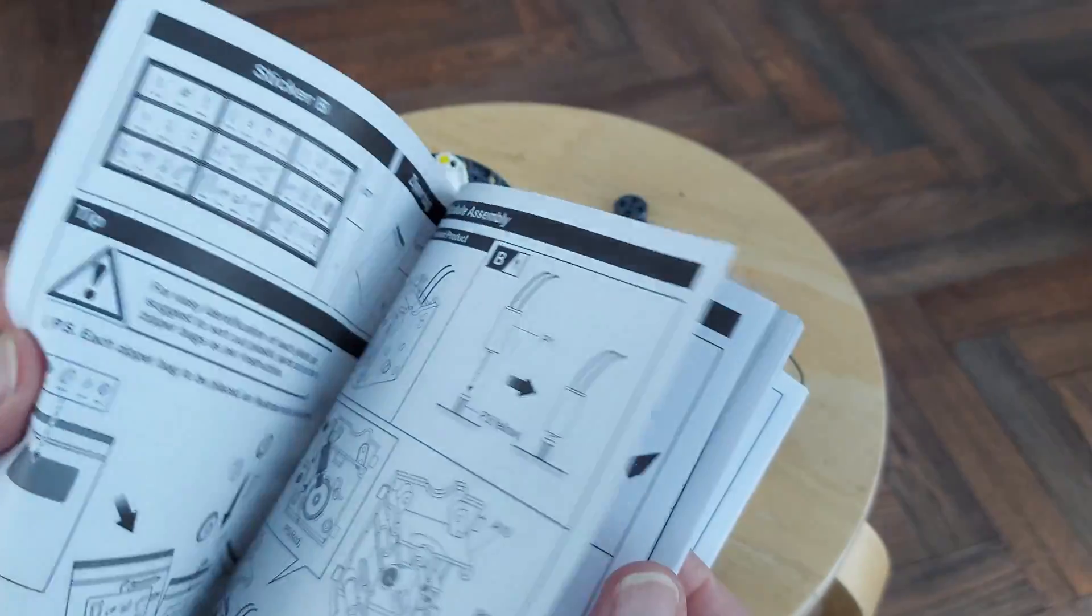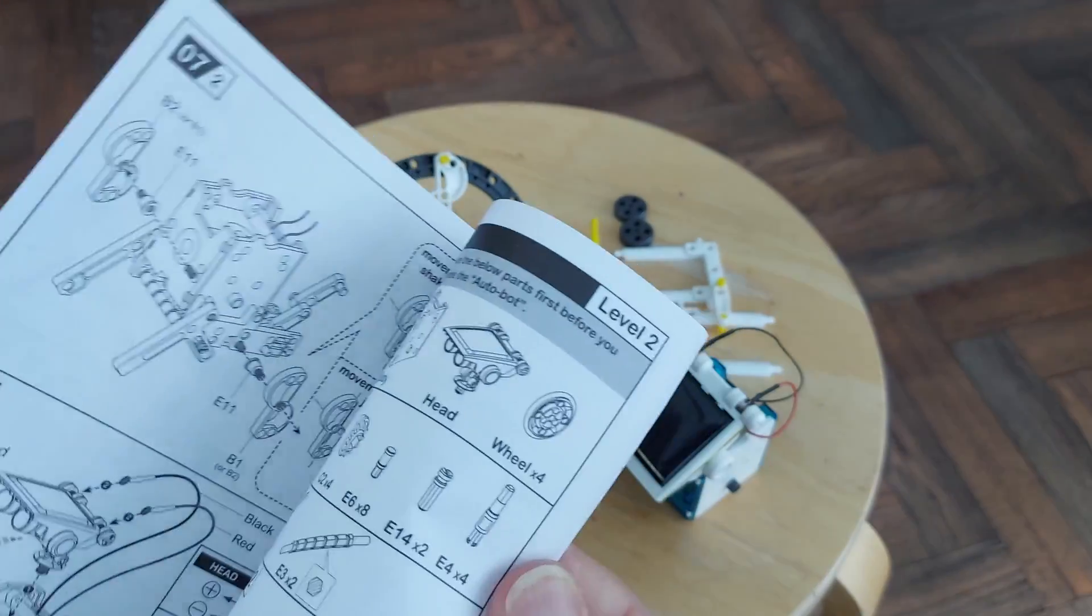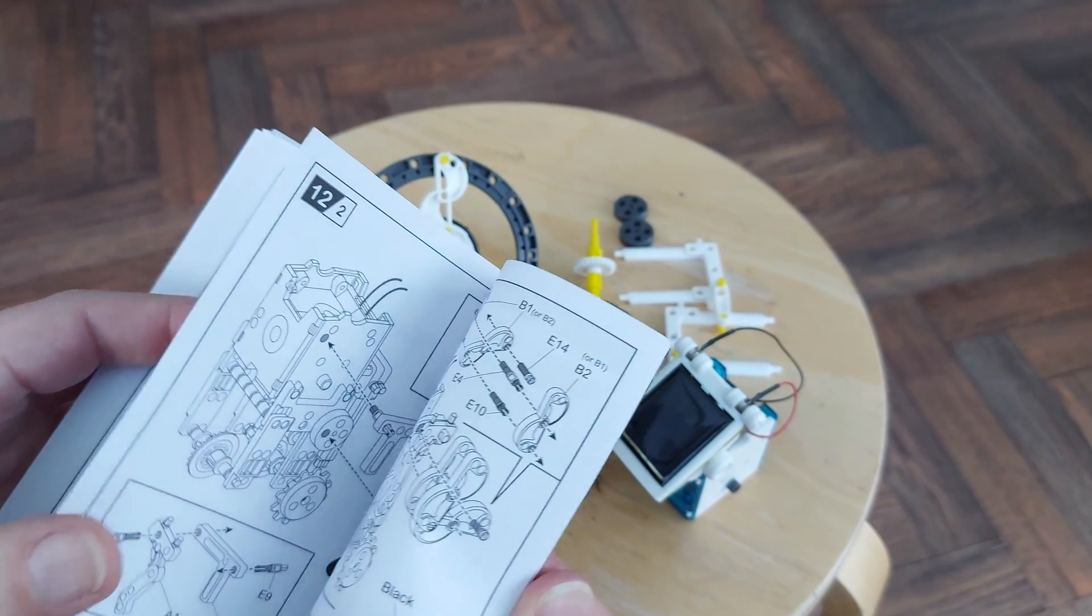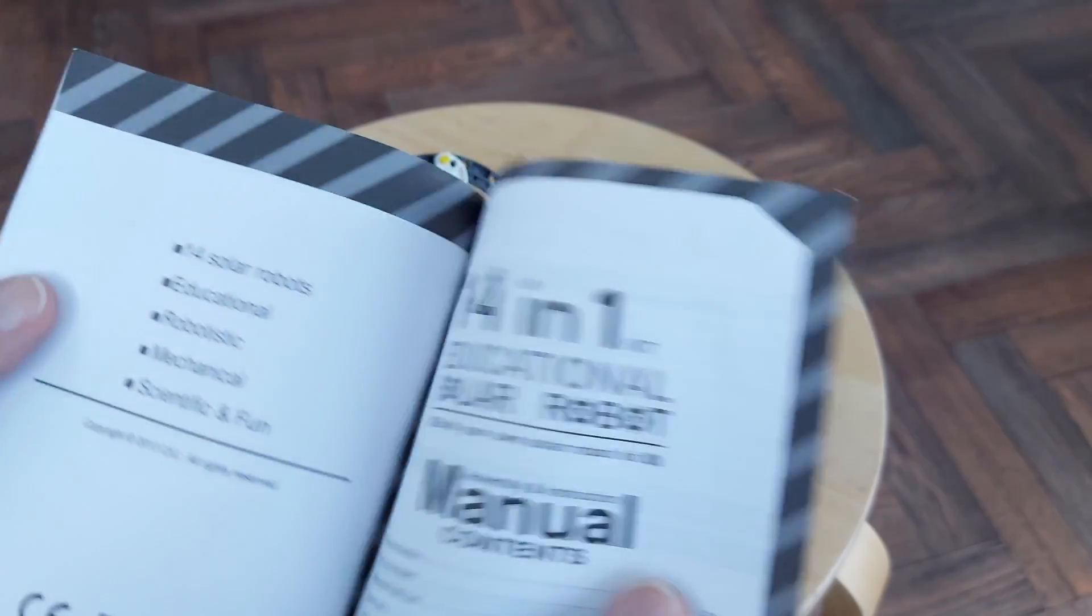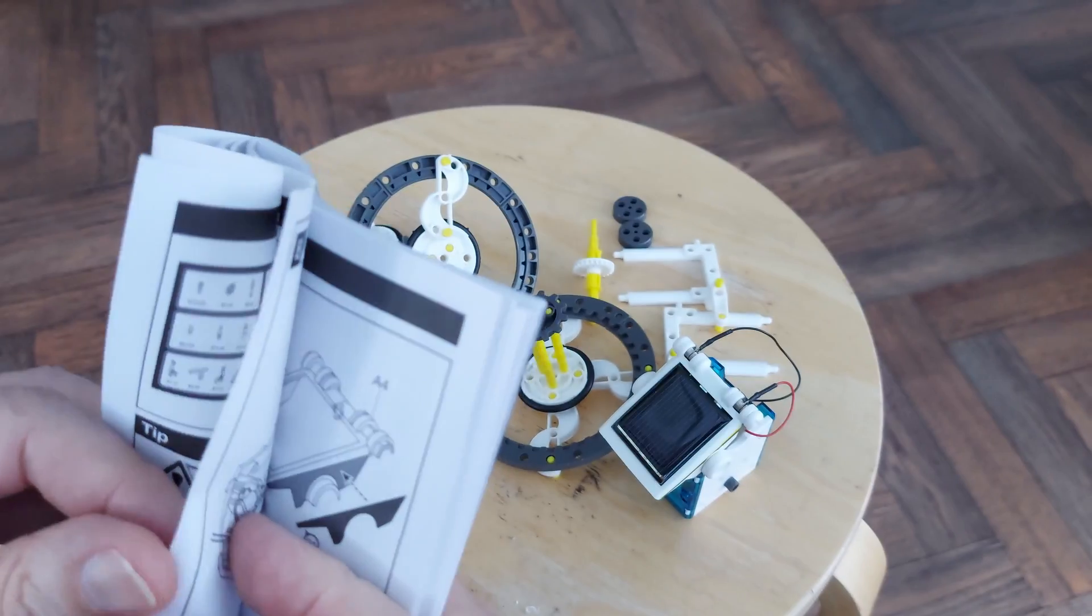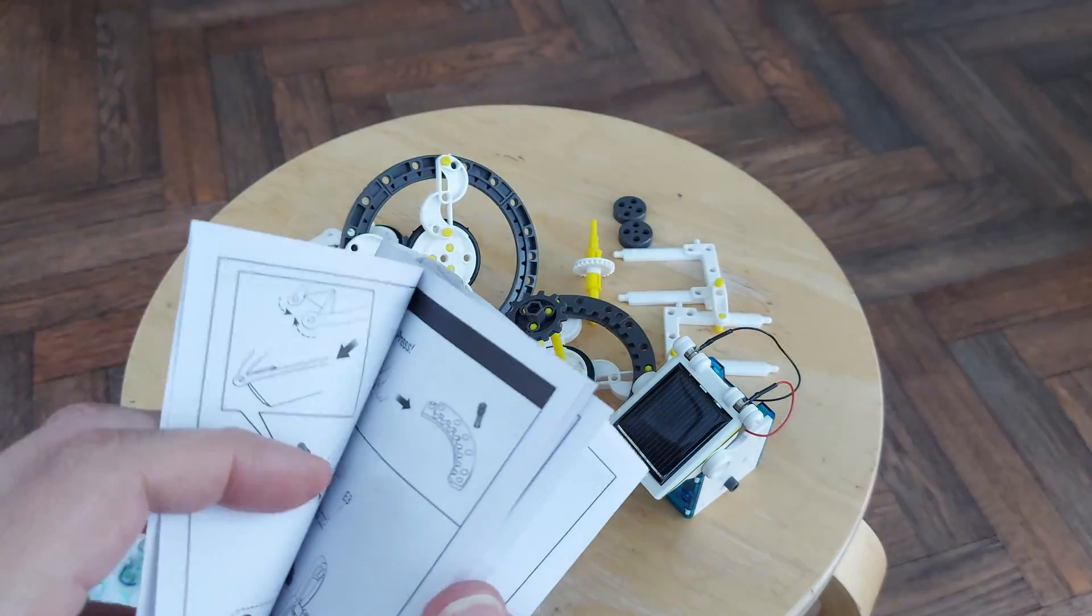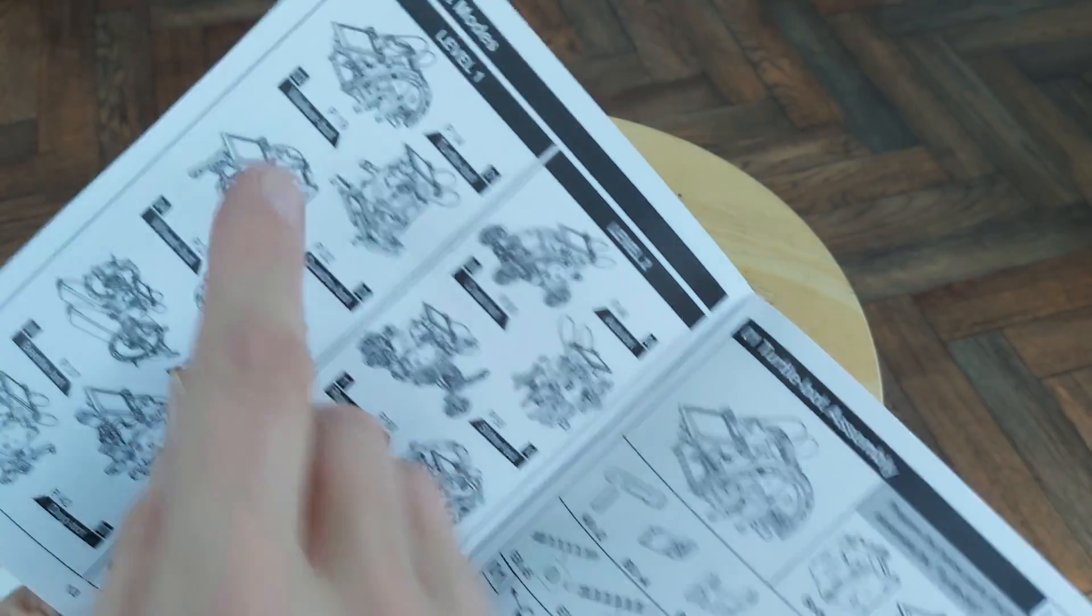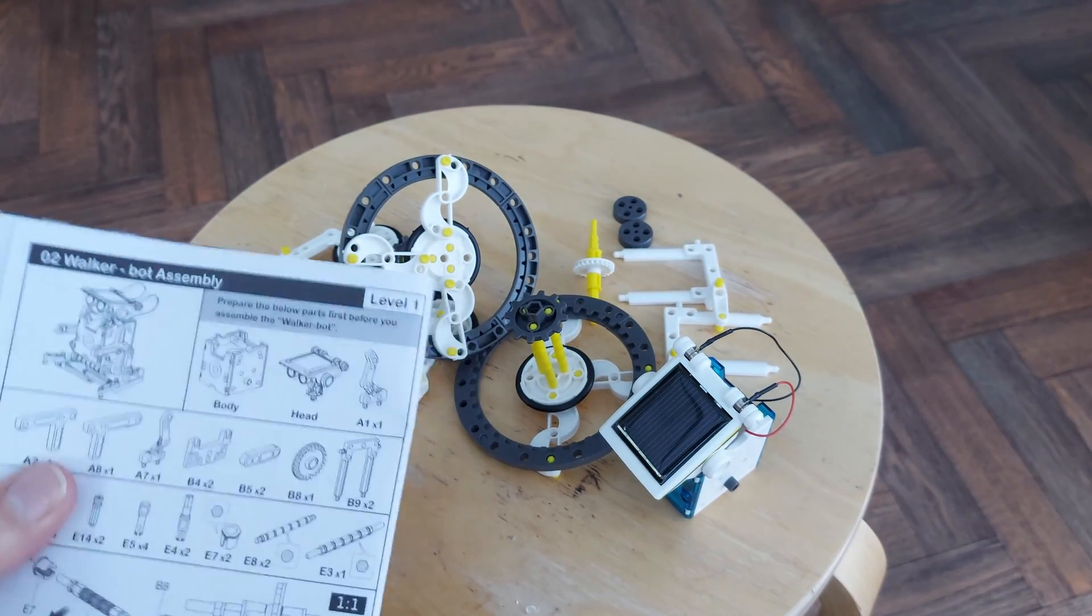Where are we? It does give you an index in the front if I look at it. Well, there's the index. There we are. Right, we want WalkerBot, page 19.